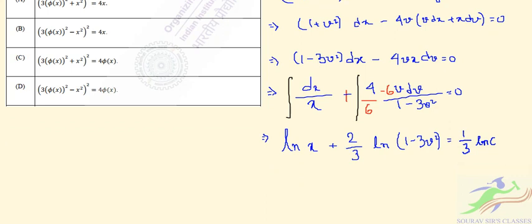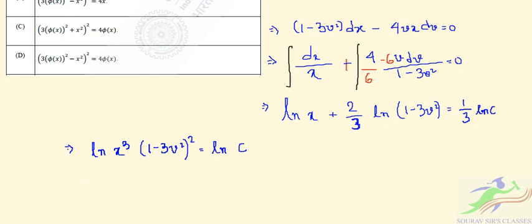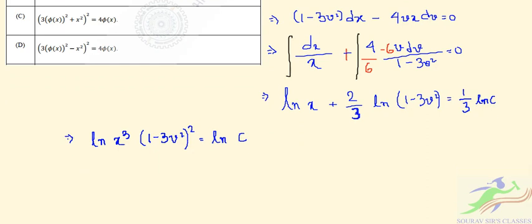Now if we do the simplification, multiplying through by 3, we get ln(x cubed times (1 minus 3v squared) squared) equal to ln c. We can now substitute back v equal to y over x, so this becomes x cubed times (1 minus 3y squared over x squared) squared equal to c.